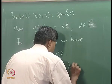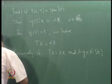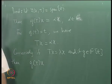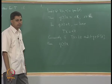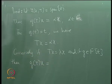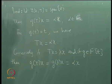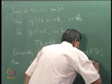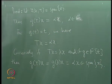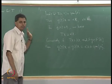Conversely, if Tx = λx and g is any polynomial, then g(T)x = g(λ)x, which is a scalar multiple of x. So g(T)x belongs to span{x} for all polynomials g, which means Z(x,T) ⊆ span{x}. This completes the proof of the third example.